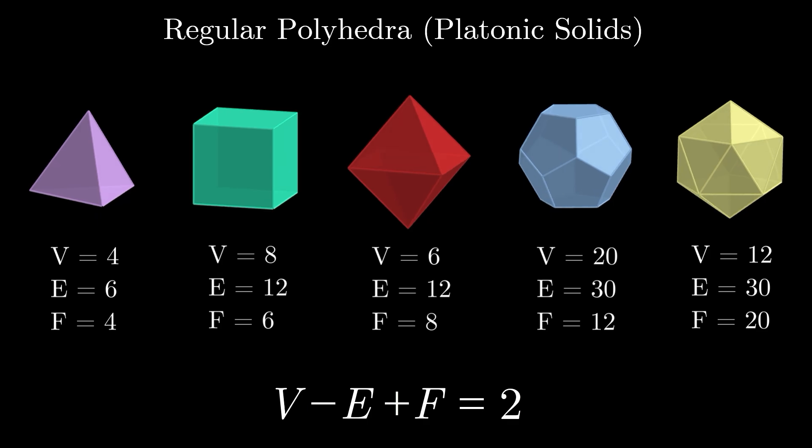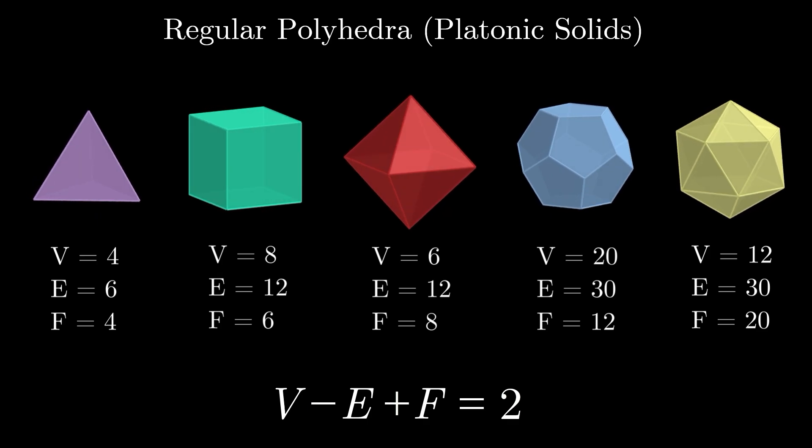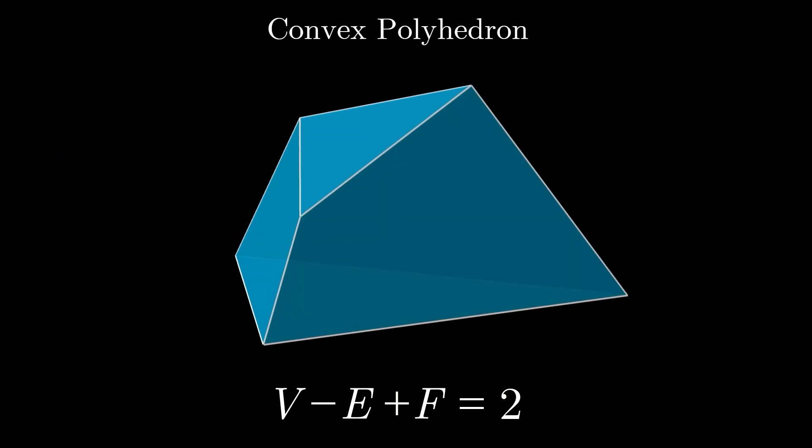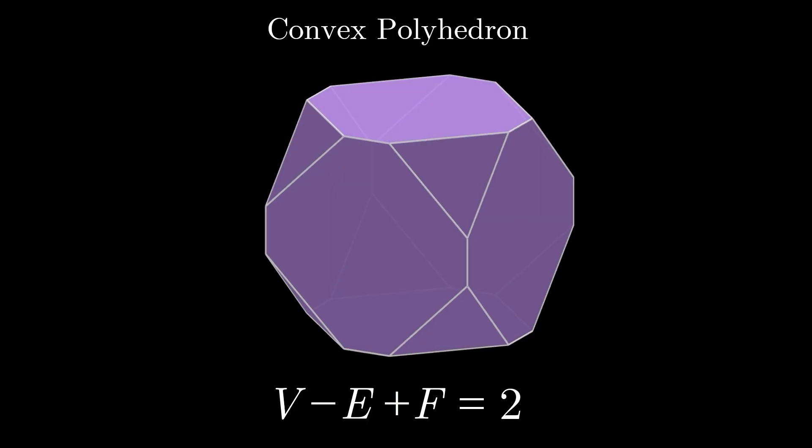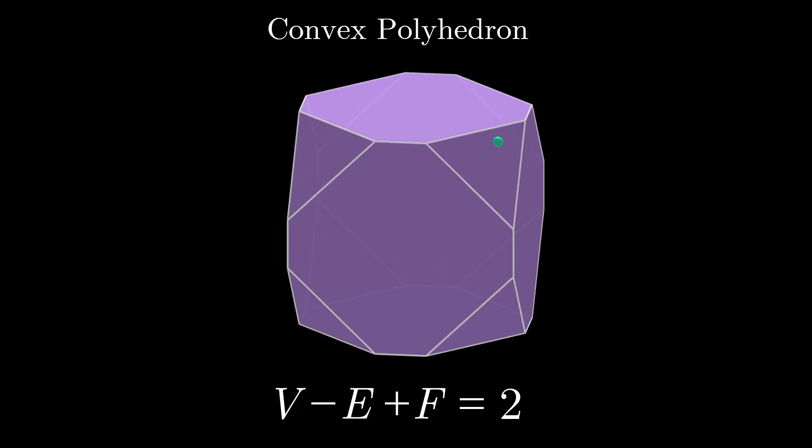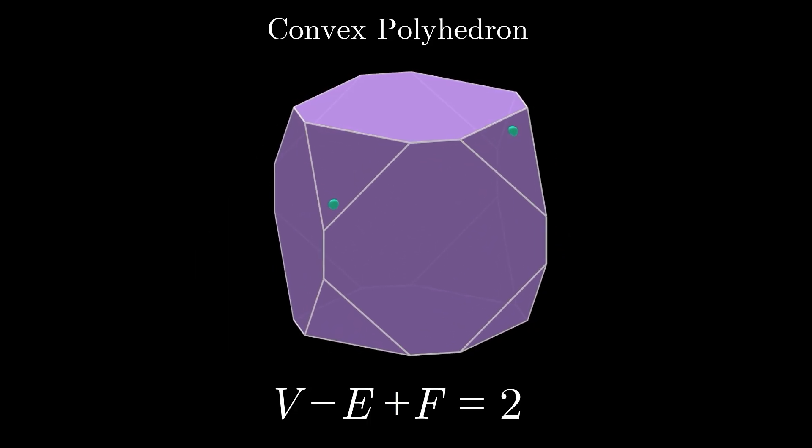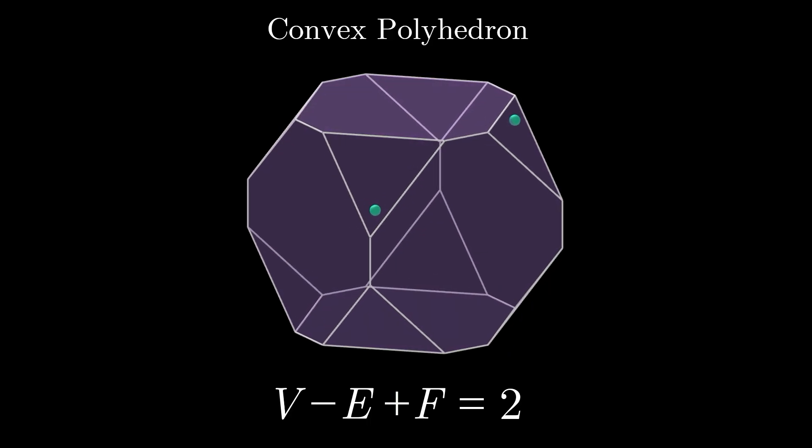In fact, the V - E + F = 2 equation holds for any convex polyhedron. That is, a polyhedron for which connecting a point on one face to any point on any other face results in a line segment that lies entirely within the polyhedron.